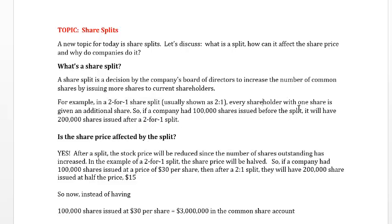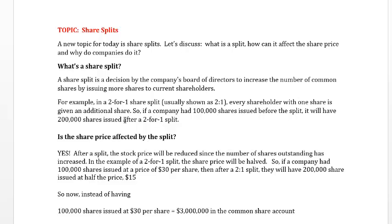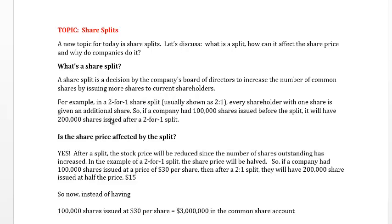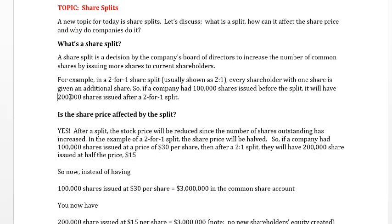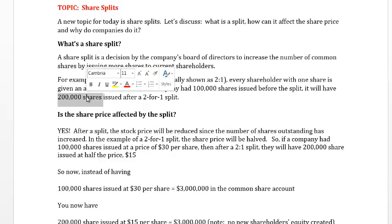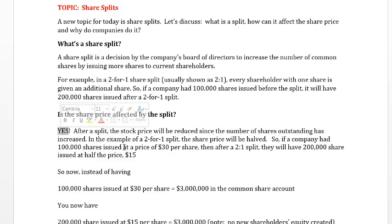Every shareholder with one share is going to get an additional one. So if a company had 100,000 shares before the split, in a two-for-one split they're going to have 200,000 shares issued, all issued to the same people. The share price is going to be reduced — companies aren't creating any new equity. All they're doing is cutting the price of the shares in half if it's a two-for-one split.